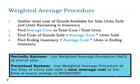The procedure for using weighted average inventory is to gather the total cost of goods available for sale, units sold, and units remaining in inventory. Then find the average cost as the total cost divided by the total units. Cost of goods sold is that average cost times the units sold, and ending inventory is the average cost times the units in ending inventory. In a periodic system, the weighted average procedure can be done just once a year at year end. If a perpetual system is used, a new average cost must be computed every time there's a change in inventory.